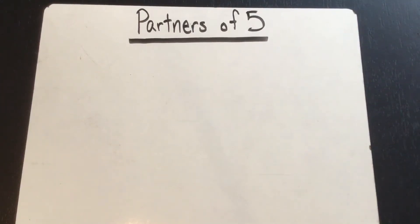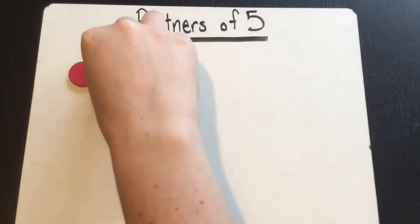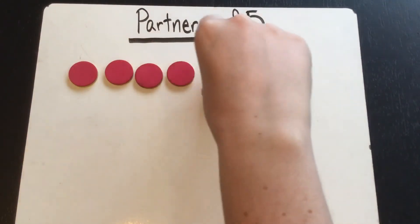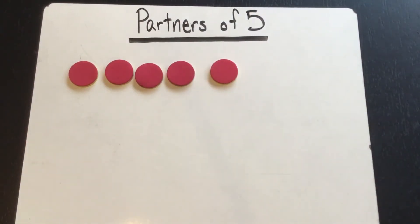This video is a review of the partners of five. For this we're going to need five objects. You don't have to use counting chips like we are right now. You could use Legos, race cars, any toy that you have at your house - you just need five of them.